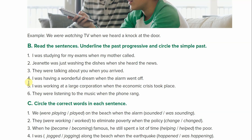Number four: I was having a wonderful dream when the alarm went off. Was having is past progressive, and went is your simple past. The alarm went off is the same as the alarm sounded, the alarm turned on — we say went off, beep beep beep.